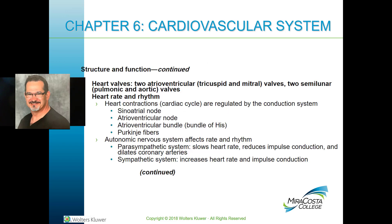Heart contractions — the cardiac cycle is regulated by a conduction system. Pay particular attention to the sinoatrial node. The SA node is typically called the natural pacemaker of the heart; it sets the rhythm. The autonomic nervous system affects both rate and rhythm. The parasympathetic system slows heart rate, reduces impulse conduction, and dilates the coronary arteries, while the sympathetic system increases heart rate and impulse conduction.